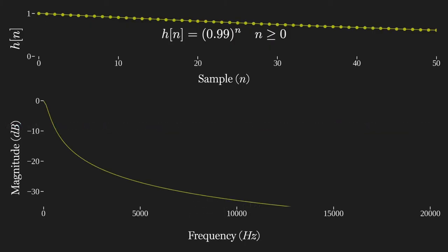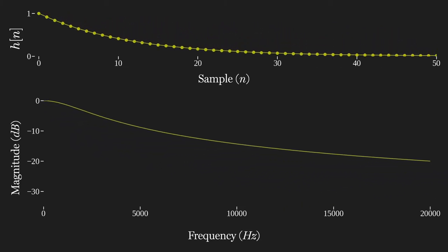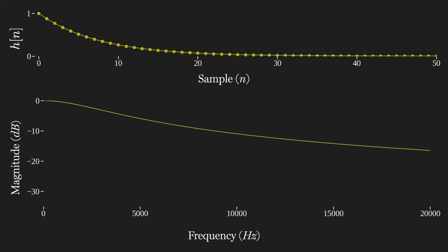In this filter, instead of the length of the impulse response, which is infinite, the weighting coefficient we use changes the low-pass cutoff frequency. Note that the coefficient must be less than one, otherwise with more and more samples, the output will increase to infinity, which we call an unstable filter. So we'll keep that coefficient less than one.